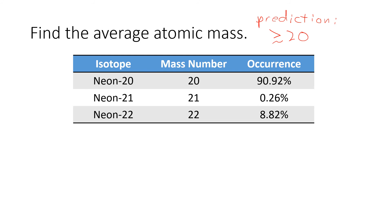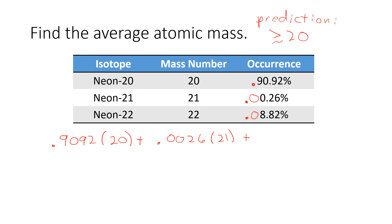We take the occurrence of each isotope and turn that percent into a decimal by moving the decimal two spots to the left: 90.92% becomes 0.9092; 0.26% becomes 0.0026; and 8.82% becomes 0.0882. So the calculation is: 0.9092 times 20, plus 0.0026 times 21, plus 0.0882 times 22.